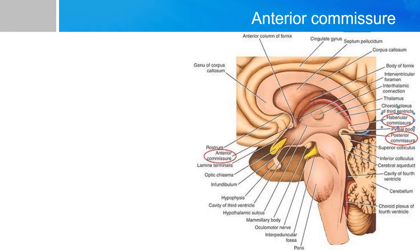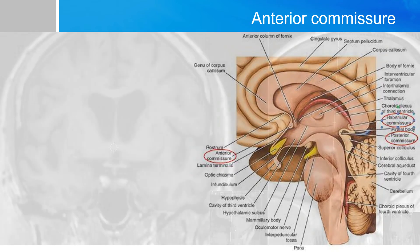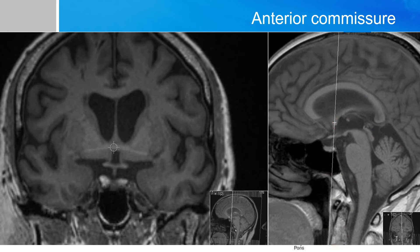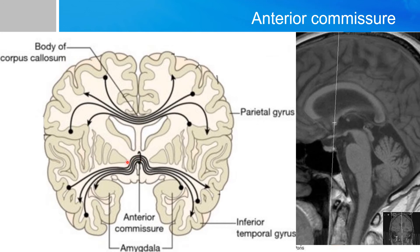The anterior commissure is a white matter tract that connects the two temporal lobes across the midline. It is easily identifiable on a mid-sagittal view as a small protrusion. On an MRI coronal slice taken right across the anterior commissure, you will see a white band of white matter tracts connecting the two hemispheres.